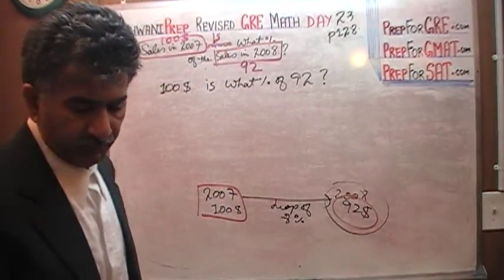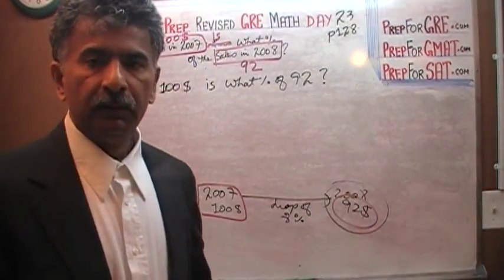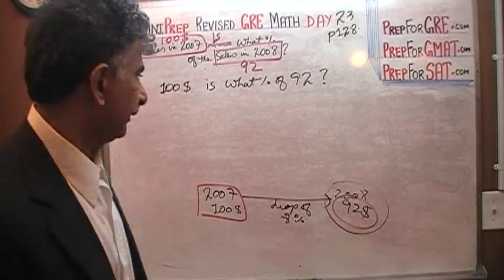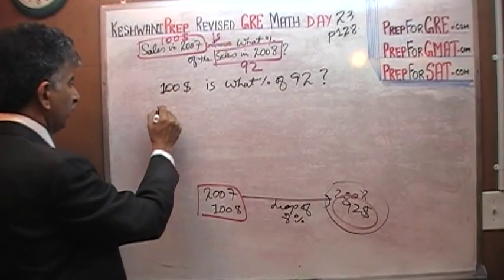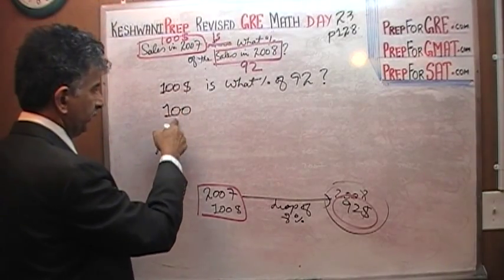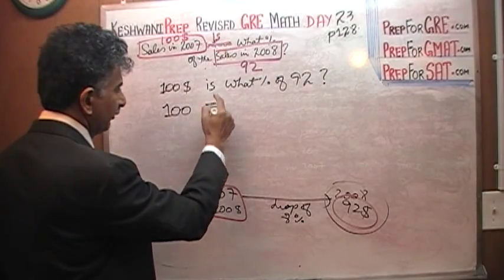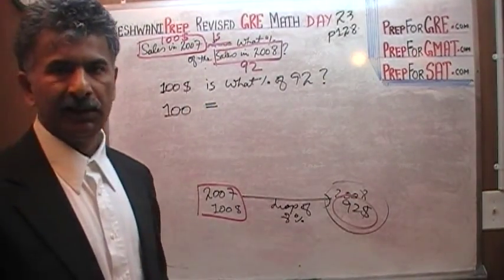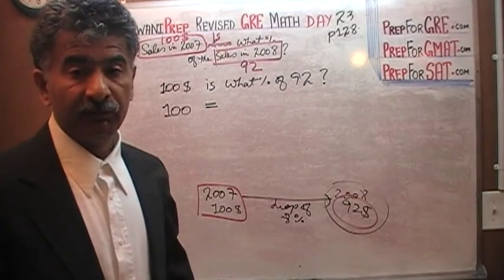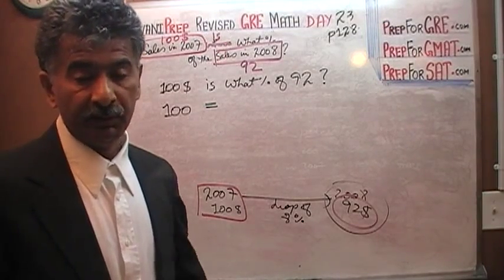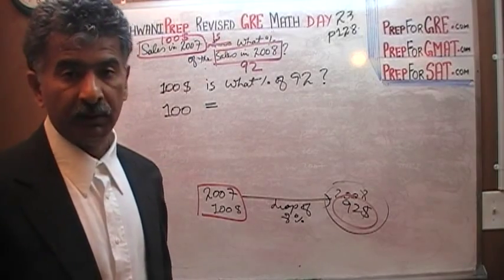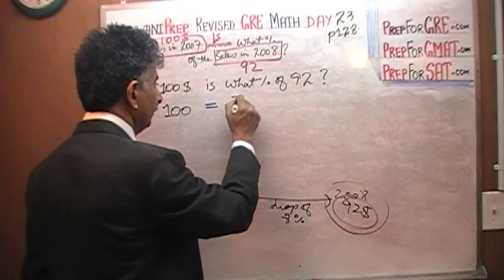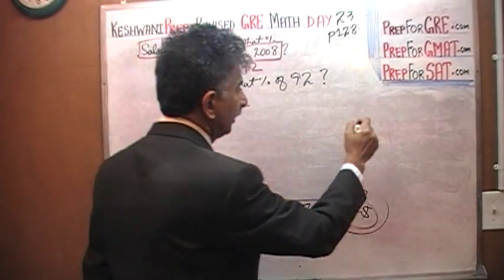Whenever you are doing a percentage problem, it is always a good idea to translate each word one by one, individually, slowly, so that you don't miss anything. 100 is — 'is' means equals. 'What' means unknown, and by convention we use X to represent the unknown. What does percent mean?